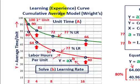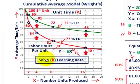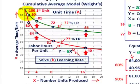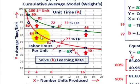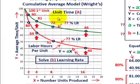We're going to be going over the learning or experience curve, working with the cumulative average model, also known as Wright's model. We're going to be solving for the learning rate. When we're talking about these learning curves, we start with a new product we're manufacturing. When we begin, we don't have a lot of experience, so it's going to take us more time. But as we continue to build more of that product, it will take less time on a per-unit basis.